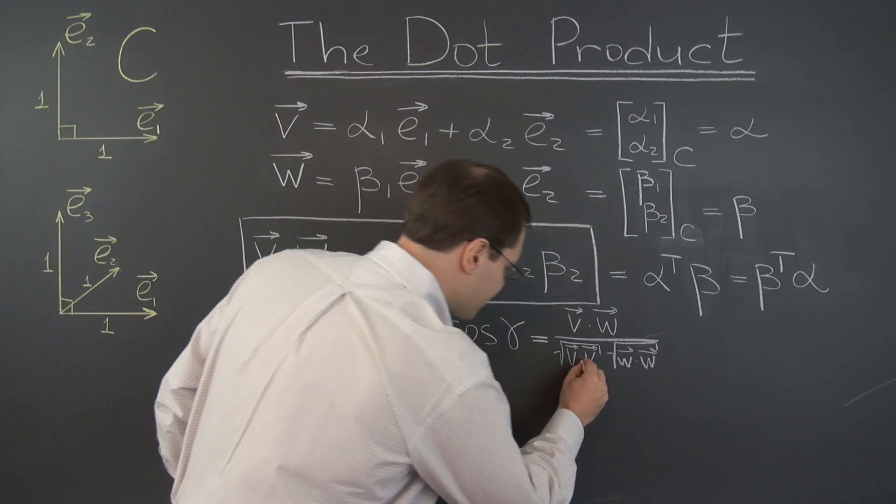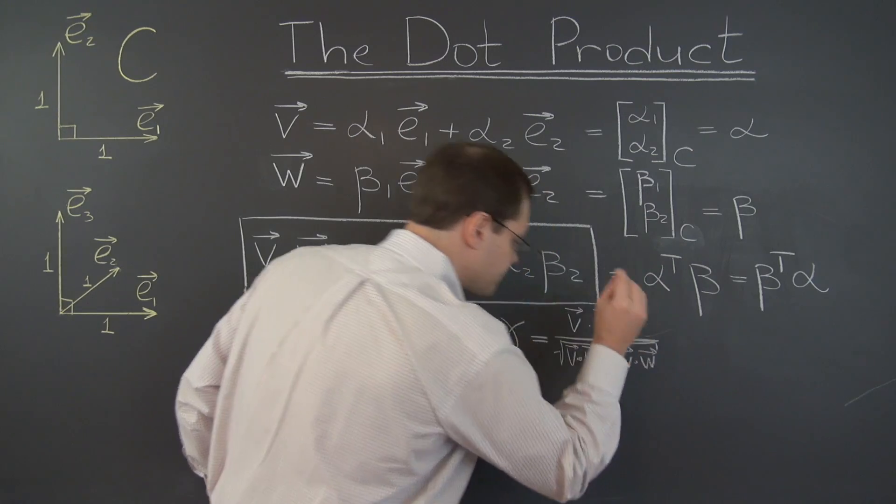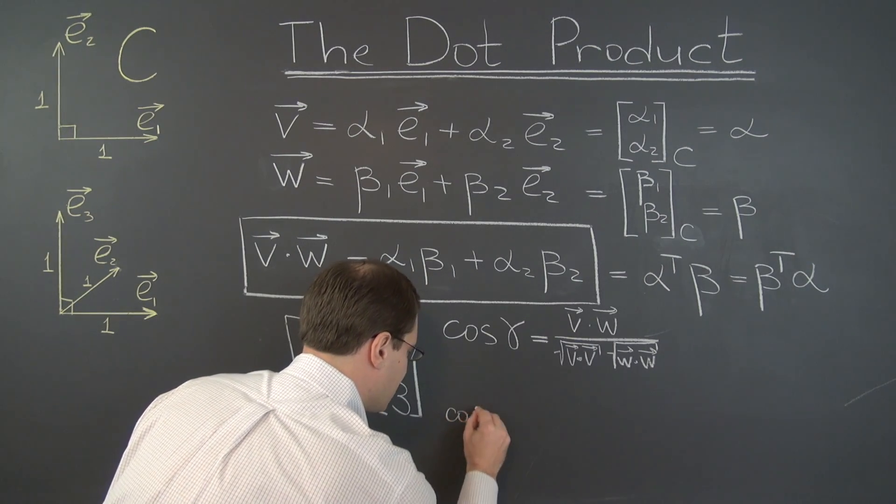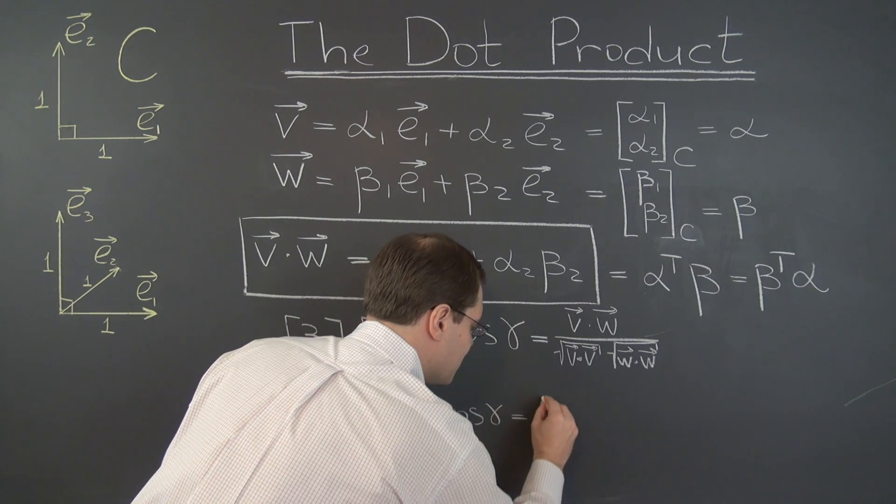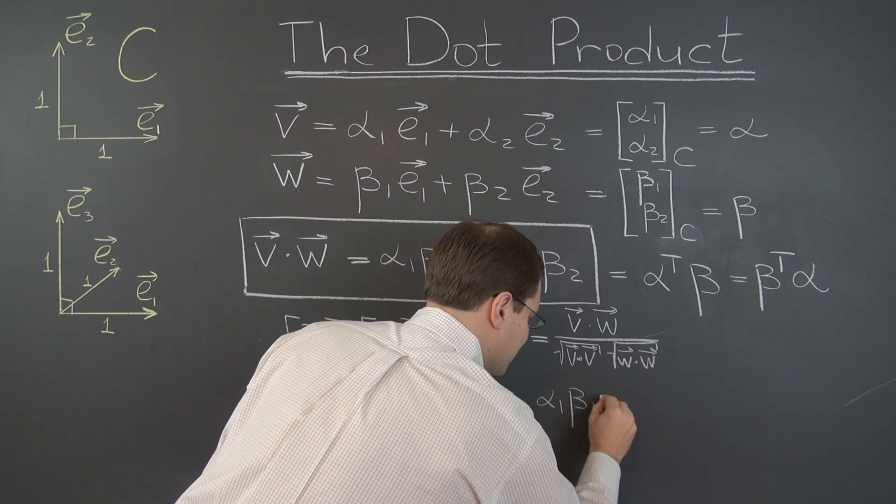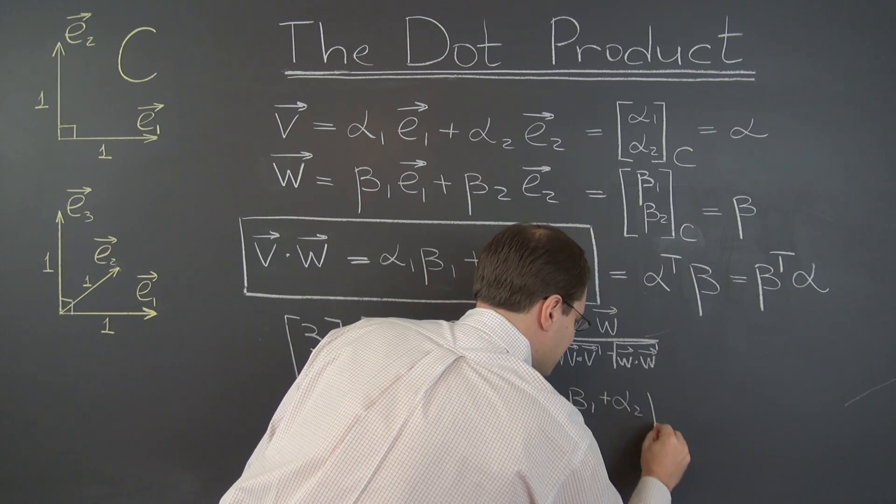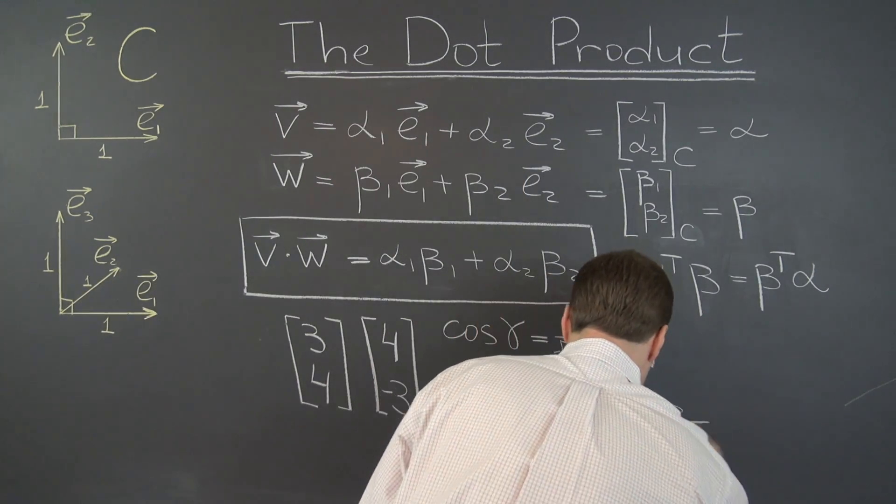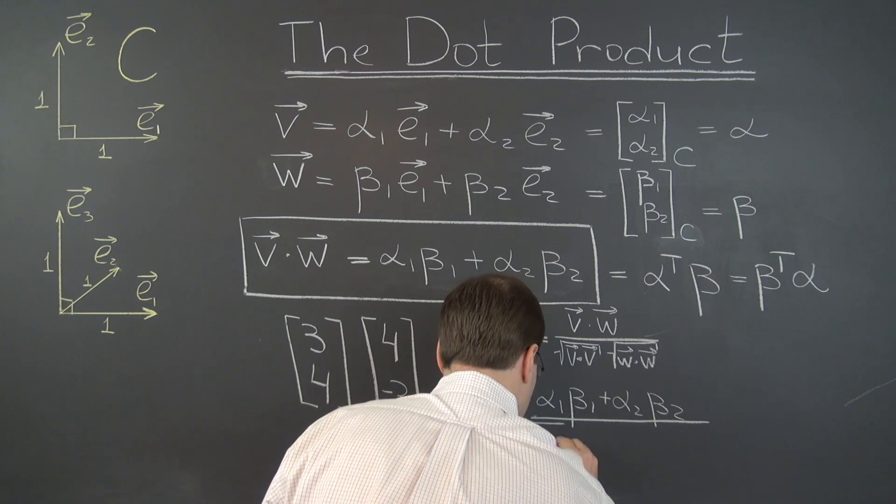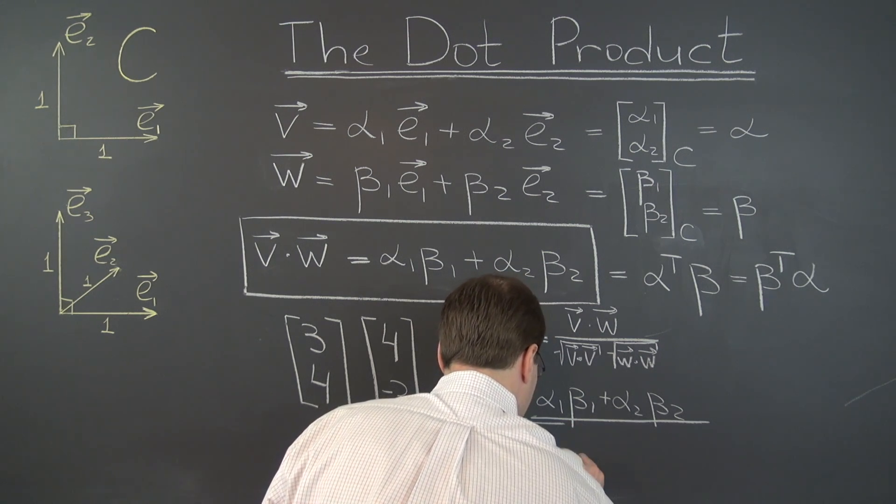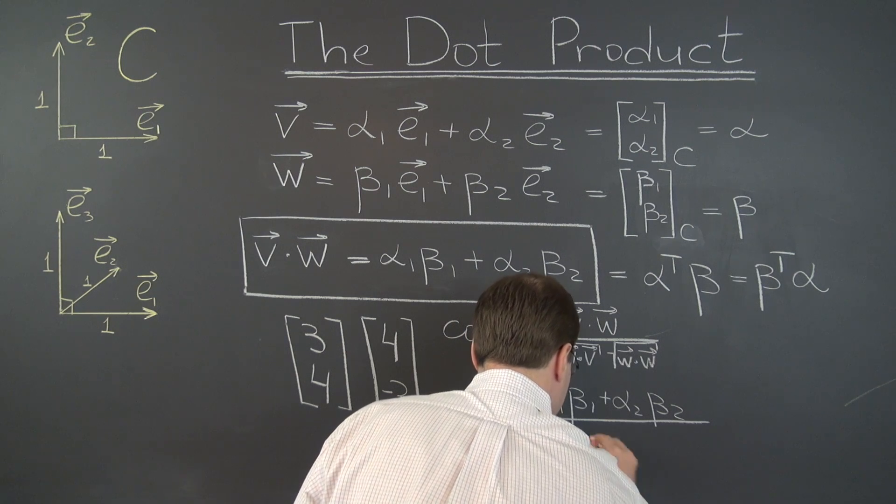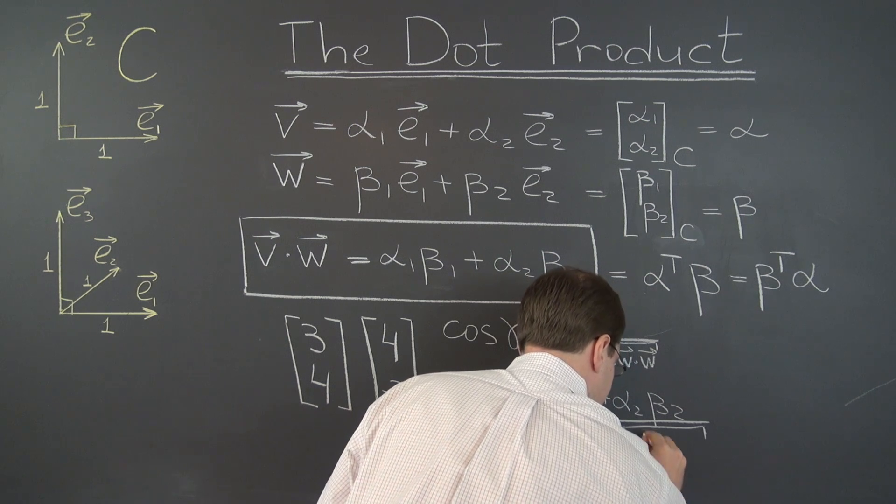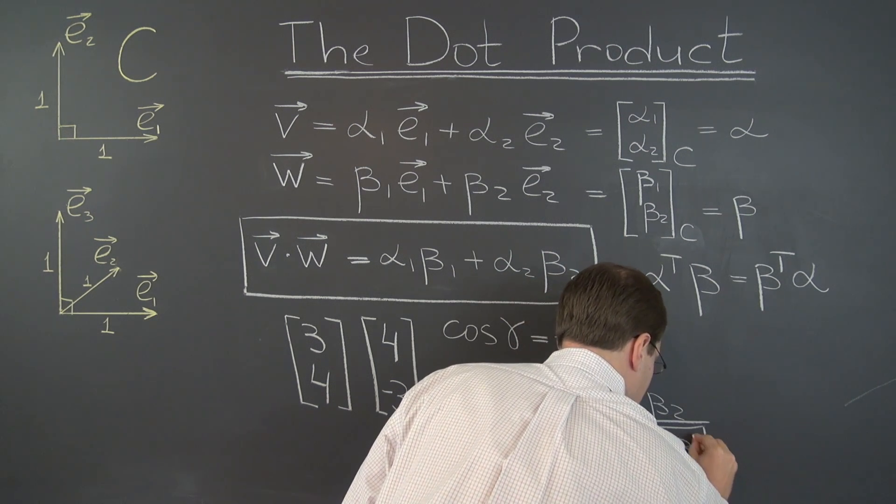And now that we have this algebraic expression for the dot product, we can write that cosine of gamma equals alpha1 beta1 plus alpha2 beta2, that of course is v times w, divided by the square root of alpha1 squared plus alpha2 squared and the square root of beta1 squared plus beta2 squared.